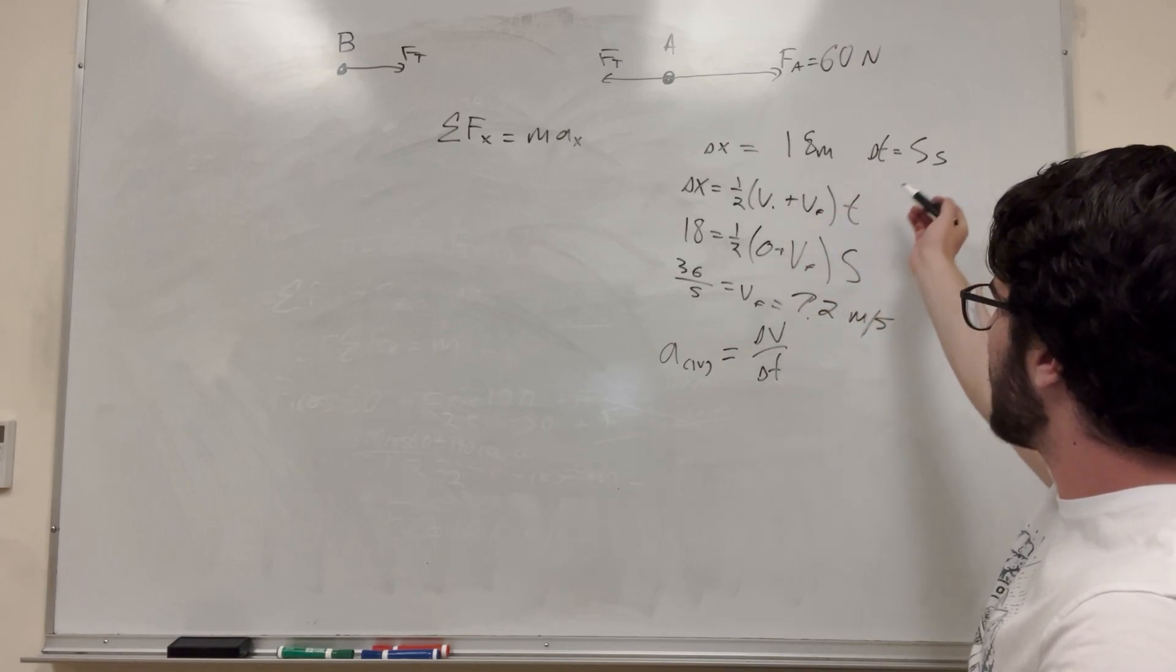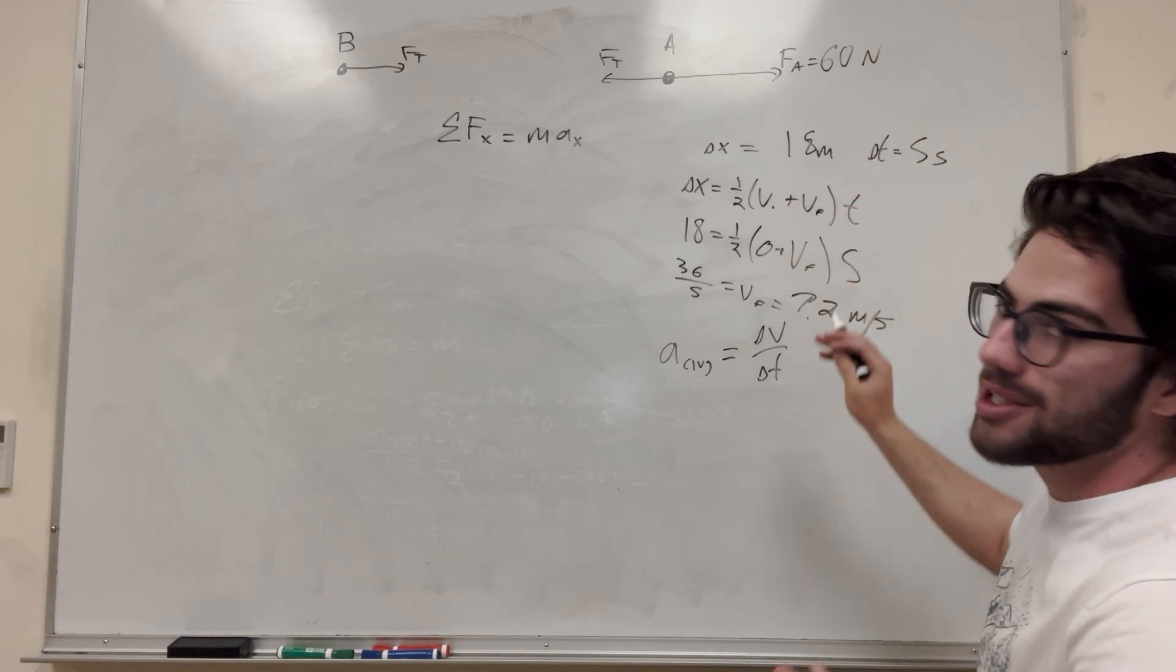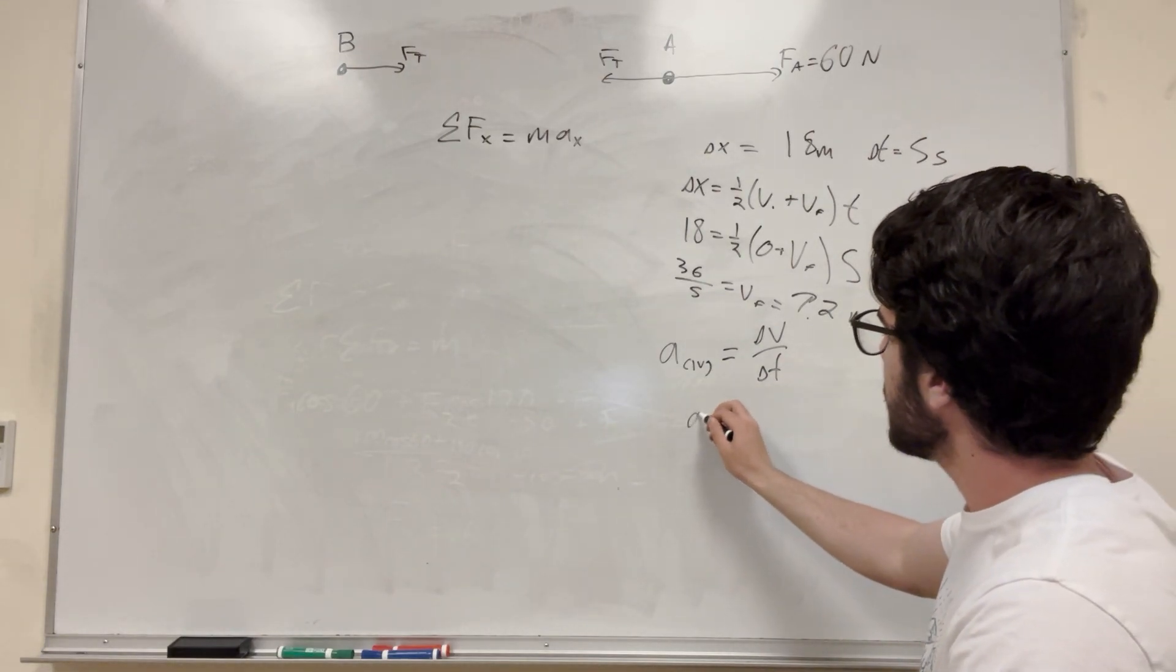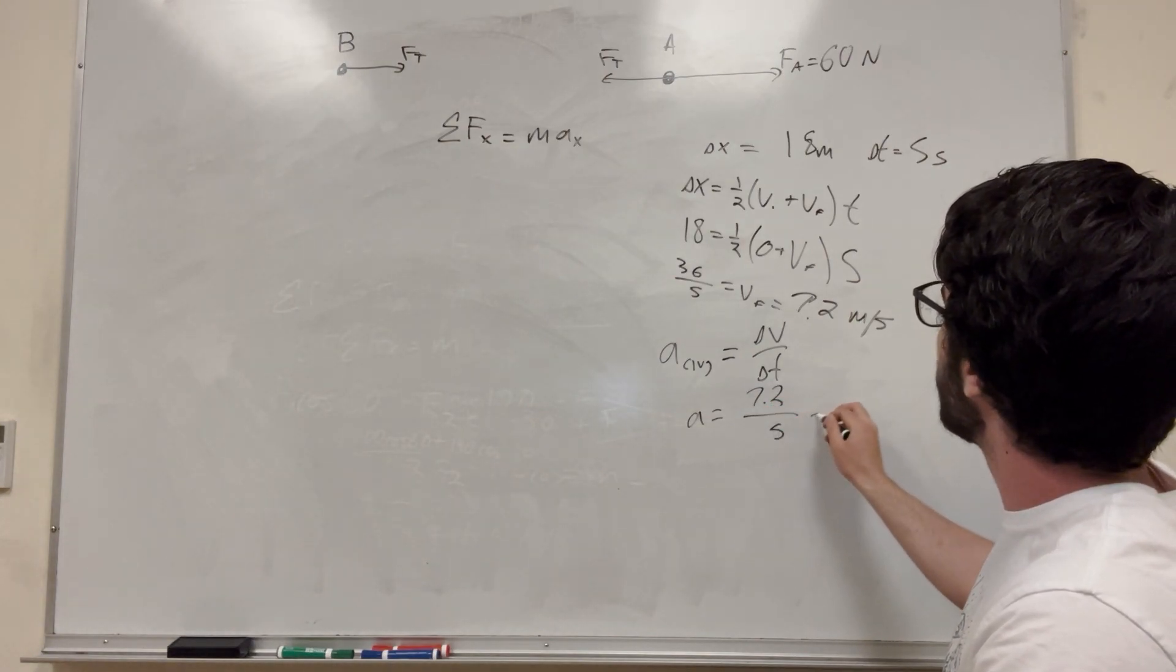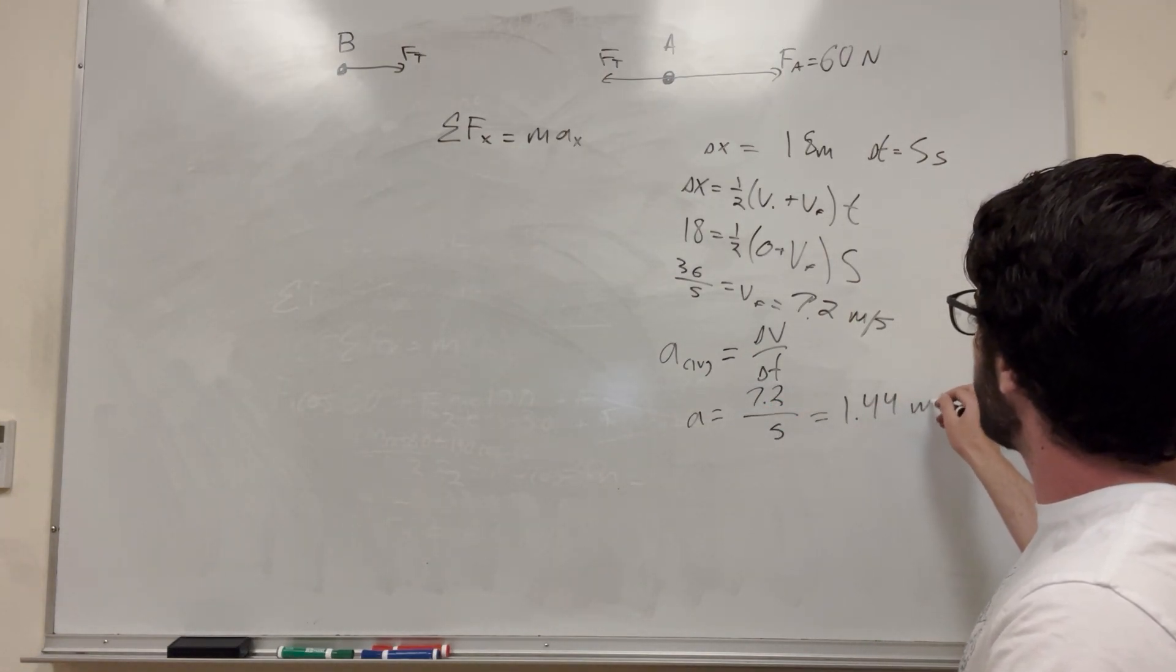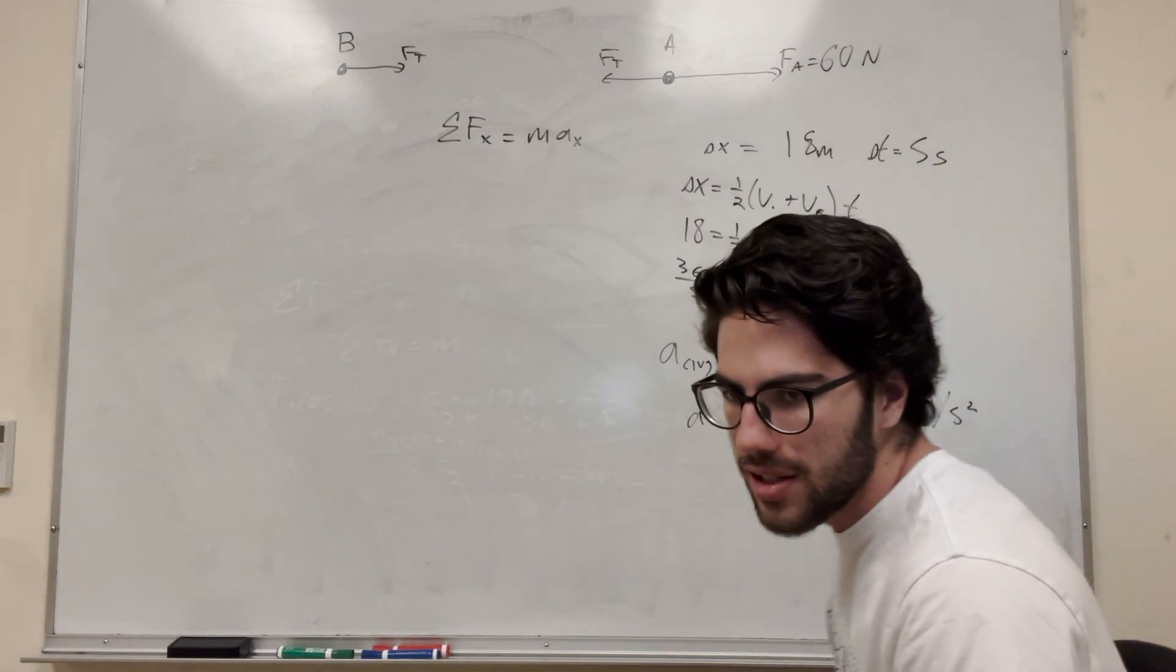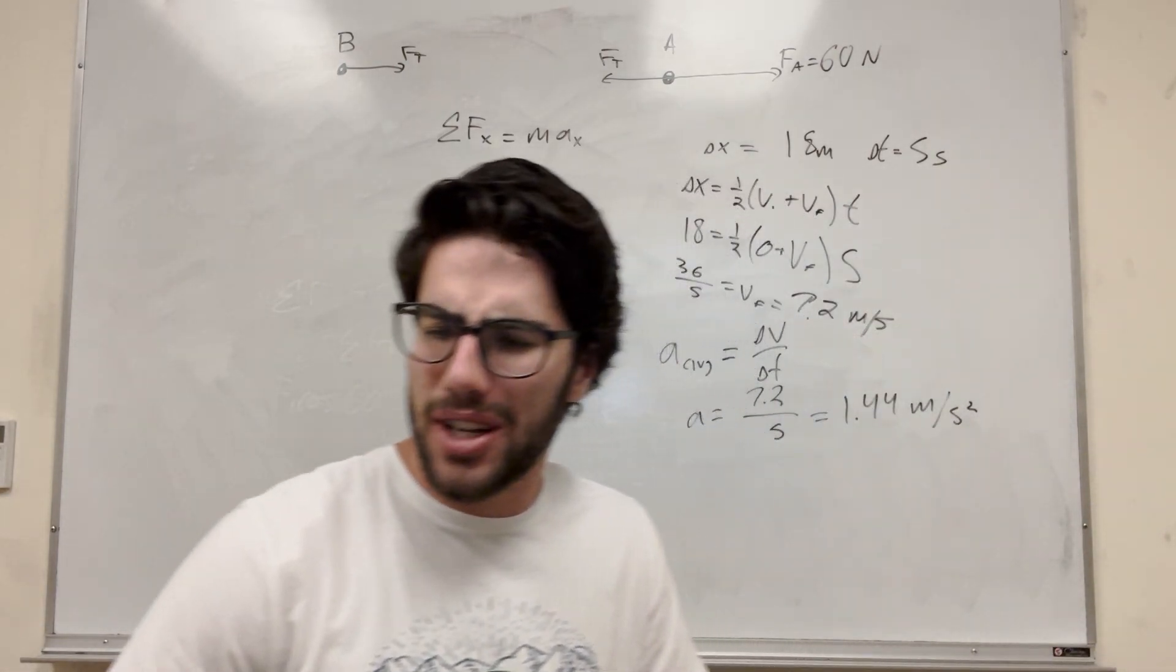So we have change in time, and we have change in velocity because we know it starts from 0 and it goes to this velocity. That means that our acceleration is going to be 7.2 divided by 5, and this is 1.44 meters a second squared.